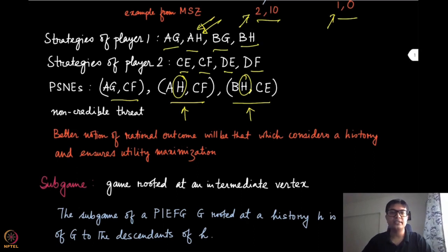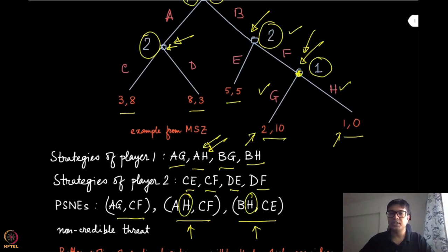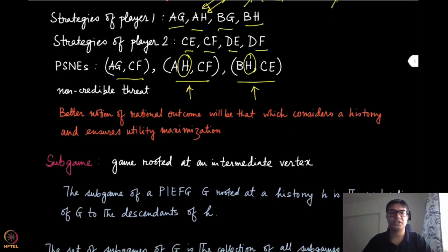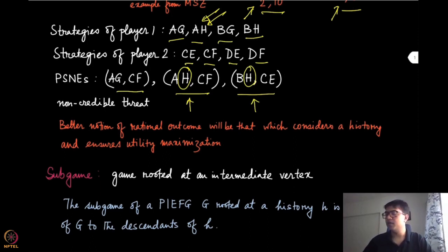The problem is that when we transform the game into normal form we are losing the information that player one can actually observe the history and then pick its action. So our equilibrium notion should change based on which kind of game we are considering. We should look at a notion of rational outcome that considers the history and ensures utility maximization at every possible history. That is exactly where we bring in the concept of subgame.